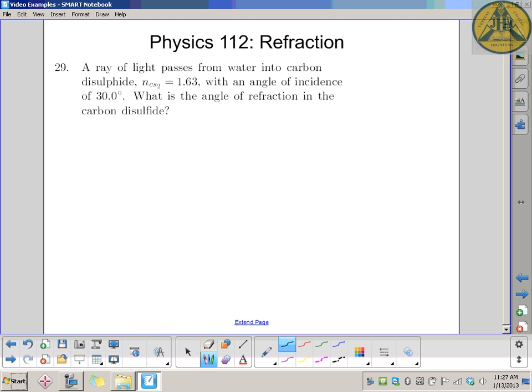A ray of light passes from water into carbon disulfide, CS2 if you remember from chemistry. Index of refraction is 1.63, angle of incidence of 30 degrees. What is the angle of refraction in the carbon disulfide?